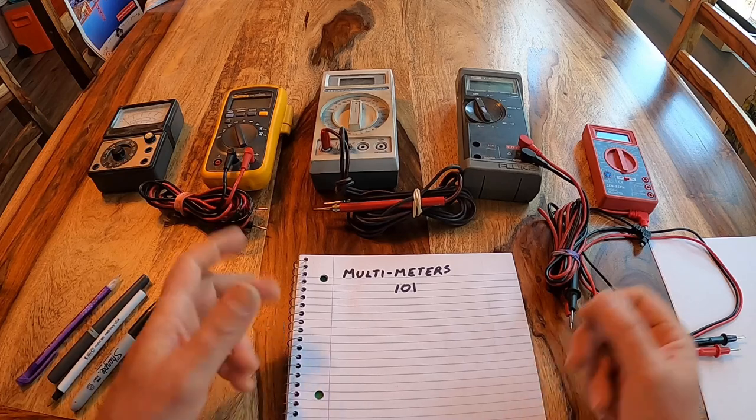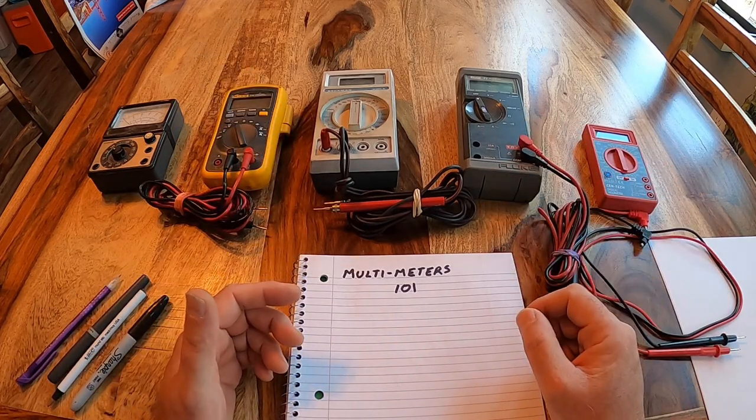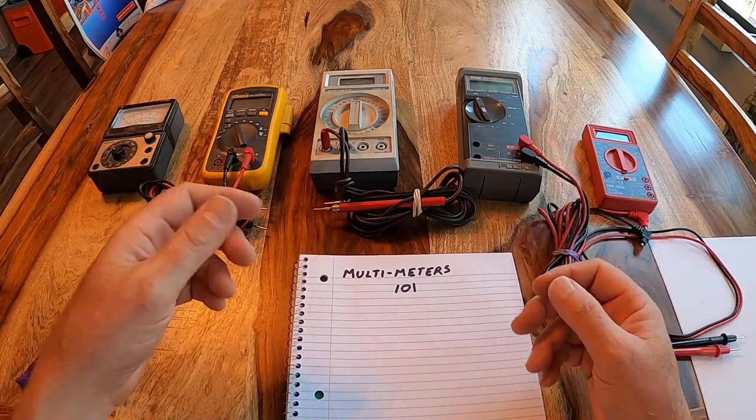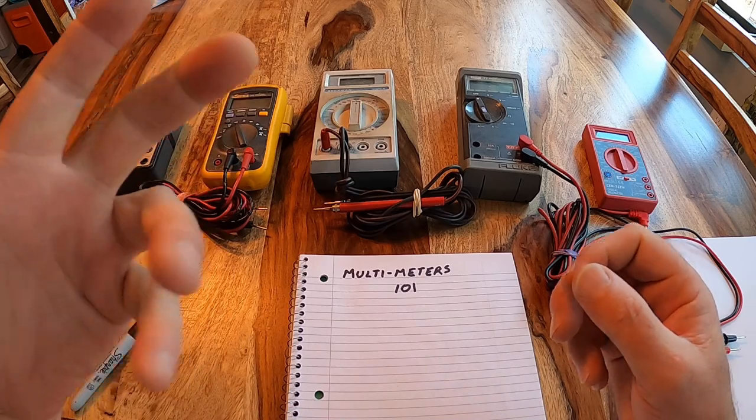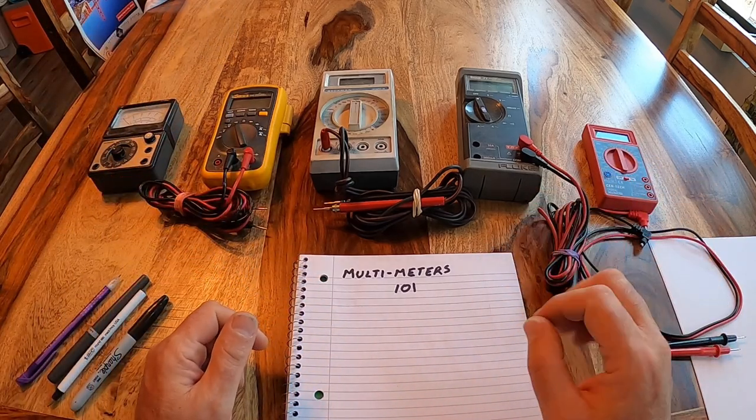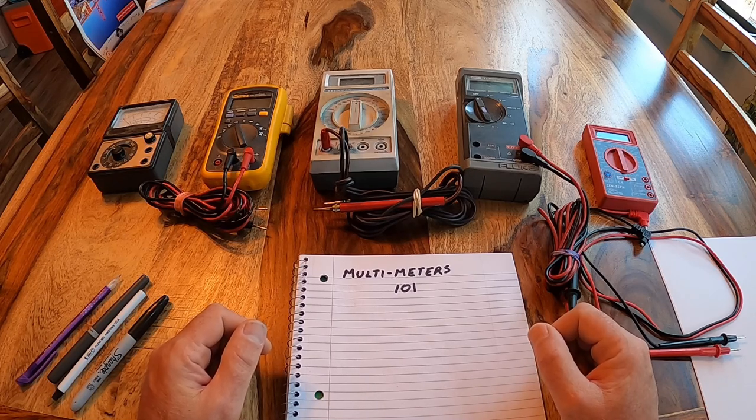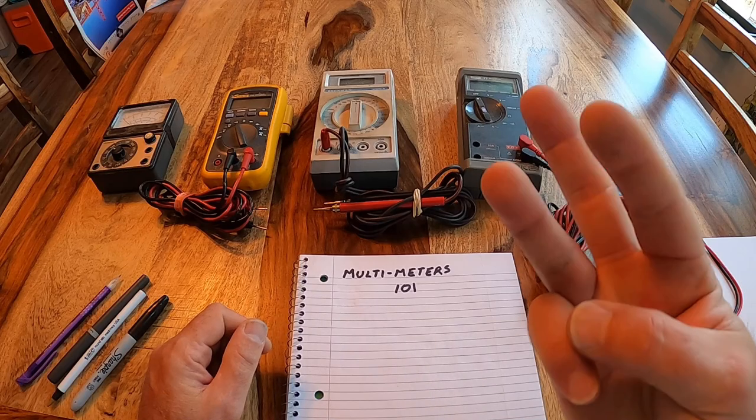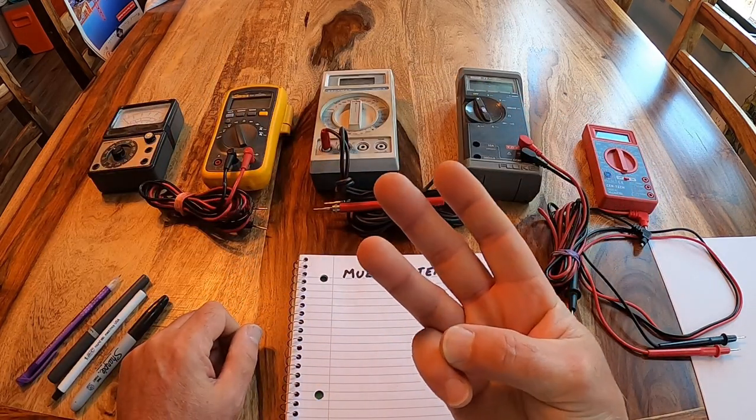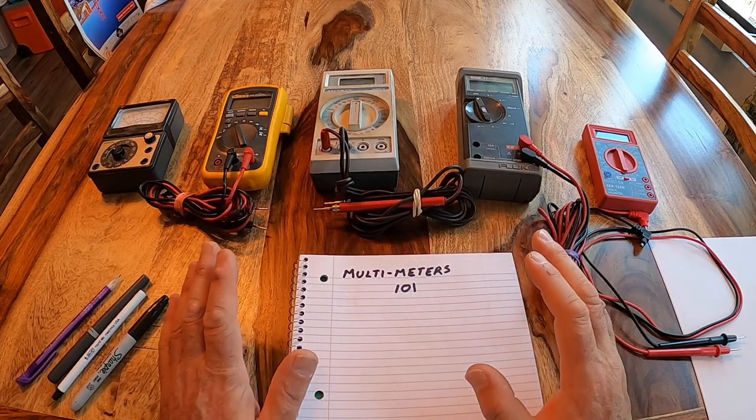So, what is a multimeter and why do I need it? A multimeter, as its name implies, means many meters. It can measure many things. Well, we don't care about all those things. We just care about a few things, specifically three things. Of the thousands of things multimeters can do, we're only interested in three things.